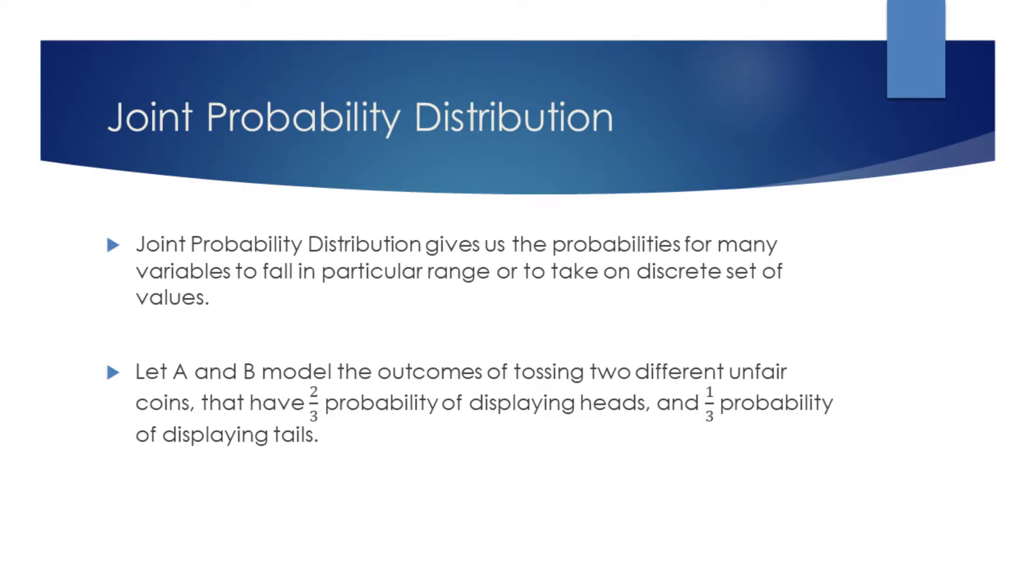Joint probability distribution gives us the probabilities for many variables to fall in a particular range or to take on a discrete set of values.